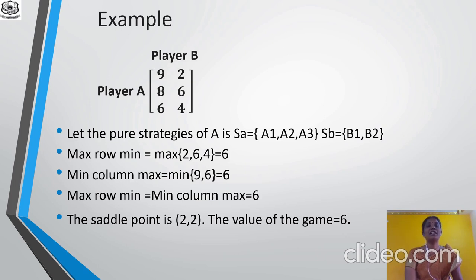Next, we find the column maximum. For column (9, 8, 6), the maximum value is 9. For column (2, 6, 4), the maximum is 6. Let the pure strategies of A be SA = {A1, A2, A3} and SB = {B1, B2}. Maximum of Row Minimum = Maximum of {2, 6, 4} = 6. Minimum of Column Maximum = Minimum of {9, 6} = 6. So Maximum of Row Minimum = Minimum of Column Maximum = 6. Therefore, the saddle point is at position (2, 2) and the value of the game is 6.